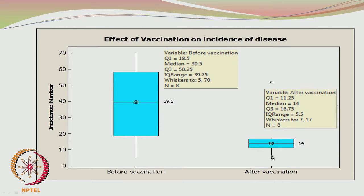Whiskers are drawn from 7 (the lower whisker) up to 17. You cannot see 17 clearly because it is almost matching with the third quartile, and you have an outlier at 52. We can definitely say the incidence number has considerably reduced — the median value has gone down from 39.5 to 14, so vaccination was really effective. Also, the spread across villages has considerably reduced after vaccination.